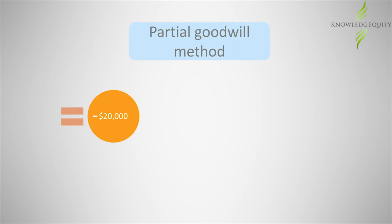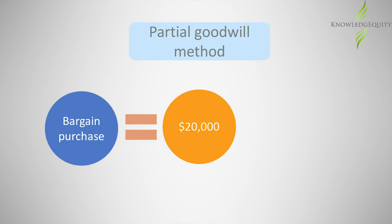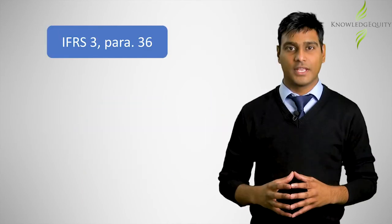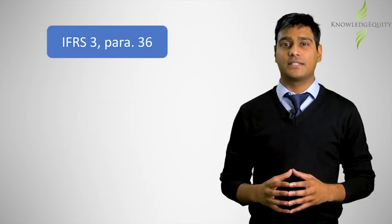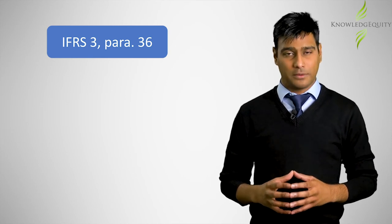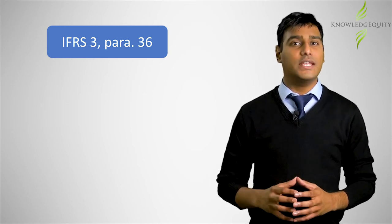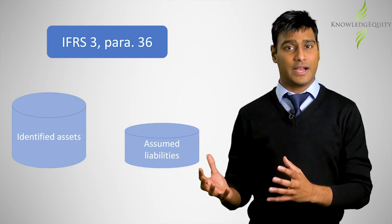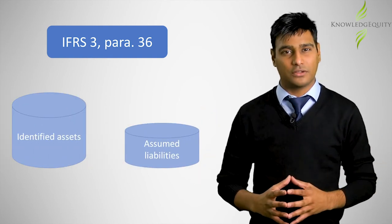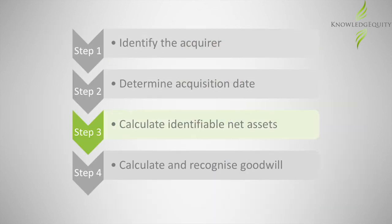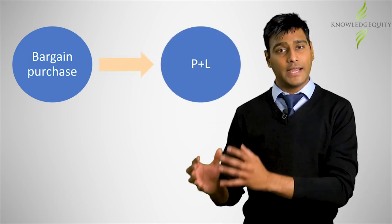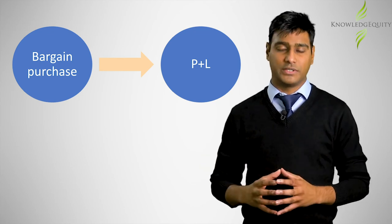This negative amount is not referred to as goodwill, but rather as a bargain purchase or negative goodwill. IFRS 3 paragraph 36 requires that when there is a bargain purchase, the acquirer is to reassess if all identifiable assets and assumed liabilities have been accounted for — in other words, reevaluate whether step 3 of the acquisition method was correctly done. If there is still a bargain purchase after reassessing, the amount shall be recognized directly in profit and loss on the acquisition date.